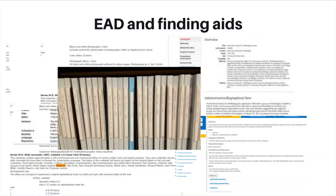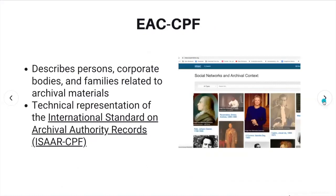Finding aids reflect the archival practice of multi-level description — that is, description of the whole archival collection coupled with description of its parts. The core application of EAC-CPF is the description of corporate bodies — in other words, organizations, institutions, businesses, etc. — persons and families related to archival materials. It is a context-oriented standard. It describes the people and groups who create records, rather than the records themselves.